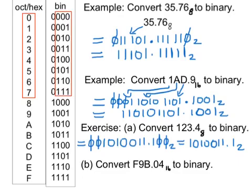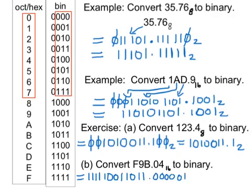Again, the zeros at the beginning and the zeros at the end we don't need to write down, because it won't change the size of the number. So the answer turns out to be 10100011.1 base 2. Now for the last part, we replace each digit within the hexadecimal number by its four-digit binary equivalent. F is 1111, nine is 1001, and B is 1011. Put in our fractional point; zero is 0000, and lastly four is 0100, base 2. There are no zeros at the beginning of the number, but there are two at the end which we don't need to write. And that's the answer.